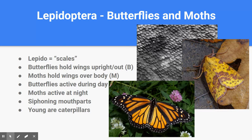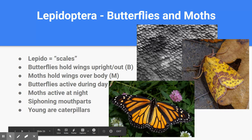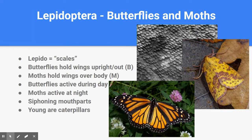To differentiate butterflies and moths, one clue is wing position. Butterflies often hold their wings up in the air when at rest — if you trace them you make a B shape, B for butterfly. Moths oftentimes hold their wings flat over their body — that makes an M shape, M for moth. There are exceptions, but when they're active is another clue: butterflies are generally active during the day, moths more so at night. Following that rule of thumb will usually get you close.